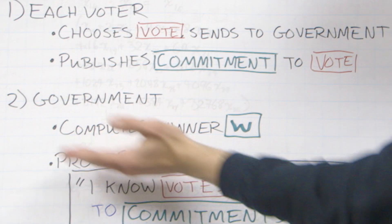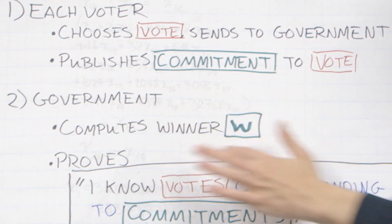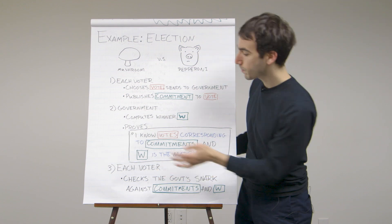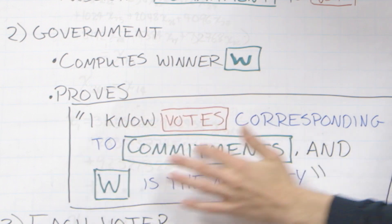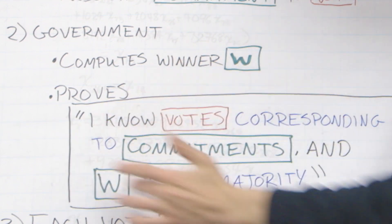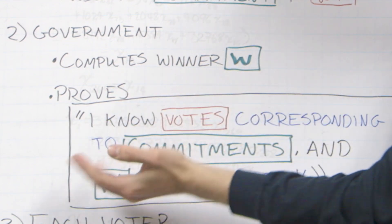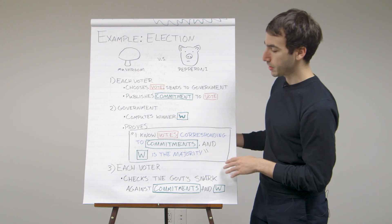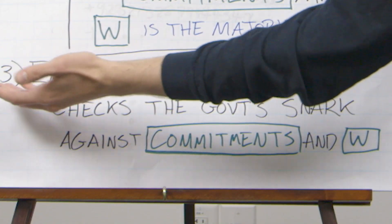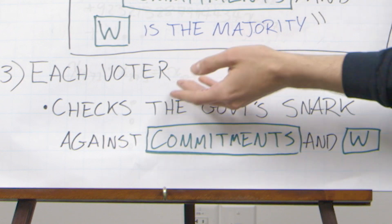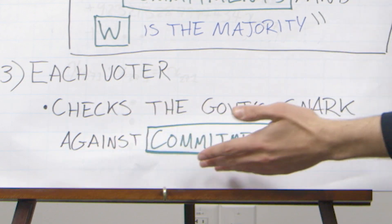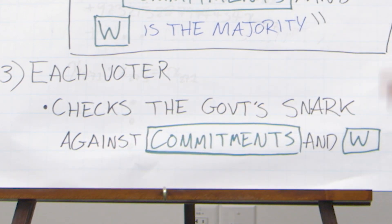In step two, Alice the government is going to compute the winner of the election, W — also public — and prove the following statement using SNARKs: I know some secret votes corresponding to the public commitments so that W is in fact the majority of all those votes. In step three, each voter will take the SNARK that Alice gave them and verify it against the public commitments and the public winner W.